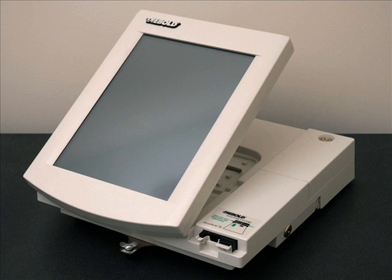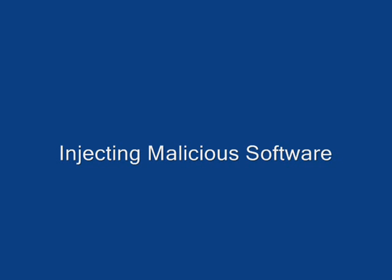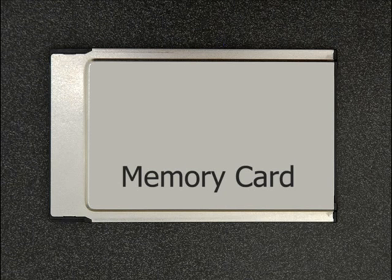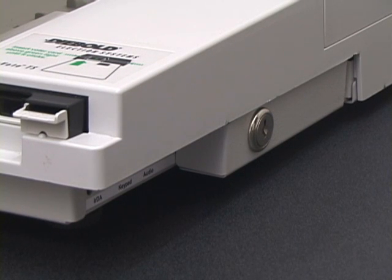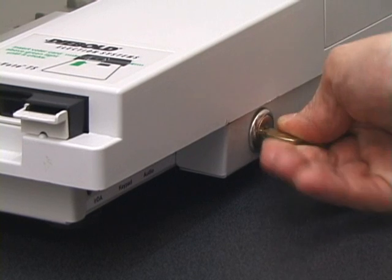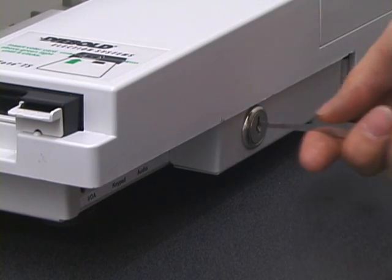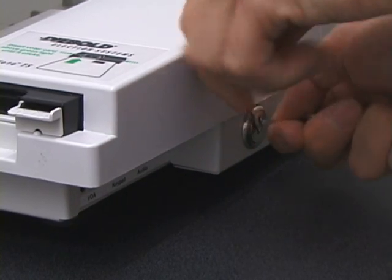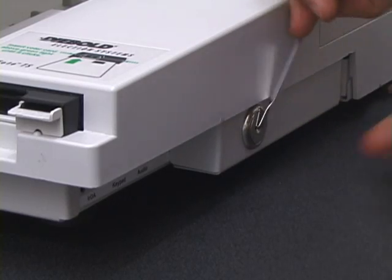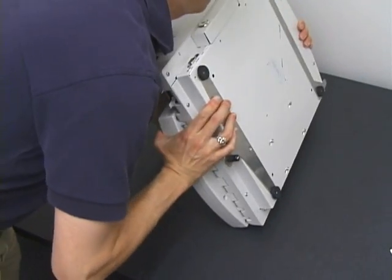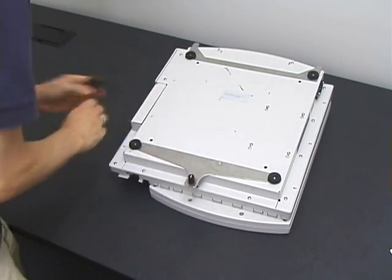This vote stealing attack requires injecting malicious software into the voting machine. Anyone who has access to a voting machine for a few minutes can install malicious code. Here is one way to do so. In advance, we prepare a memory card containing our malicious software. When we get a few minutes alone with the machine, we first open the side door. We can do this with a key. There are thousands of keys in circulation, and any hardware store will copy them. Even without a key, the lock is easily picked. One member of our team can consistently pick the lock in less than 10 seconds.